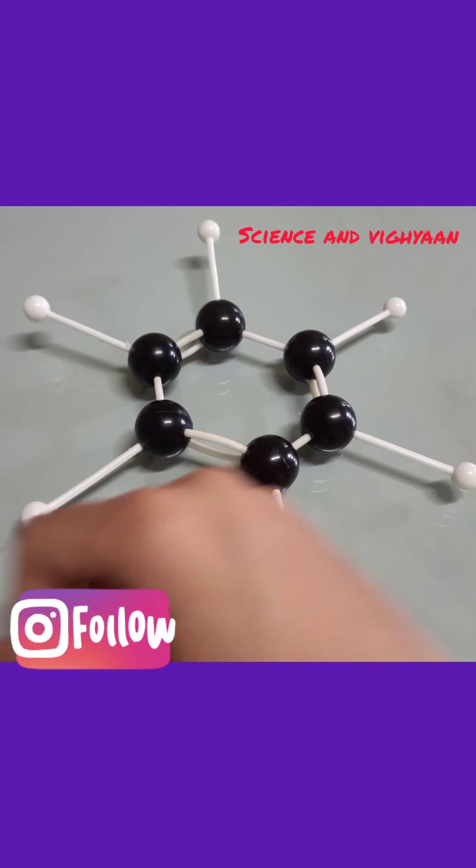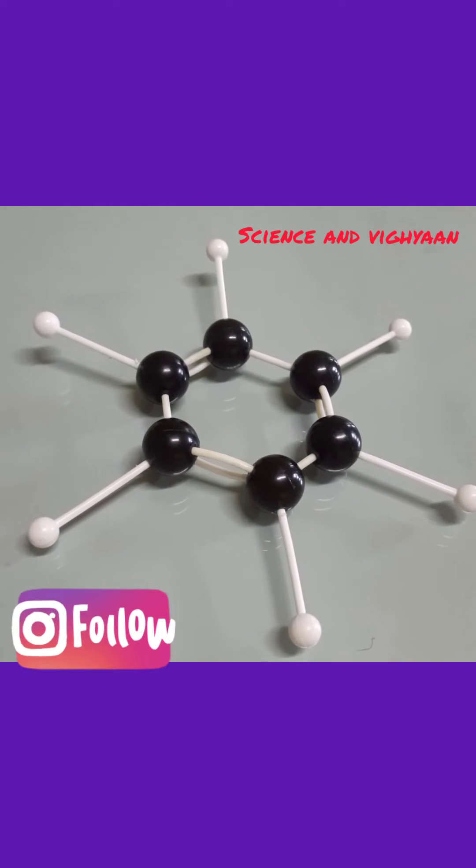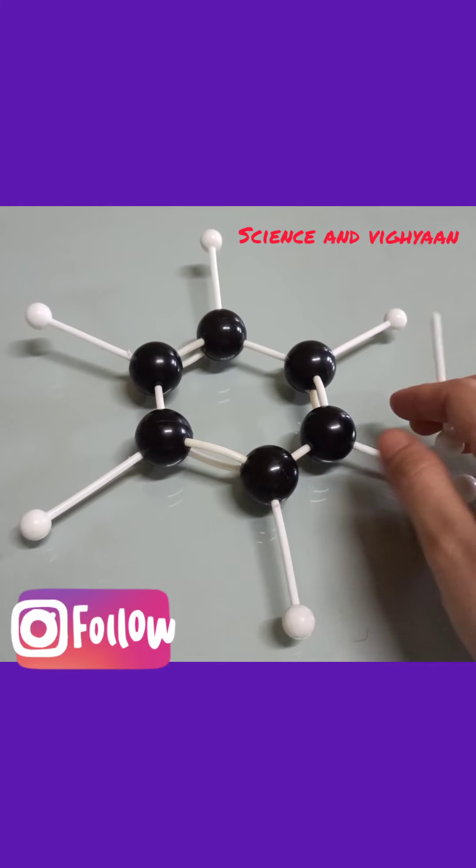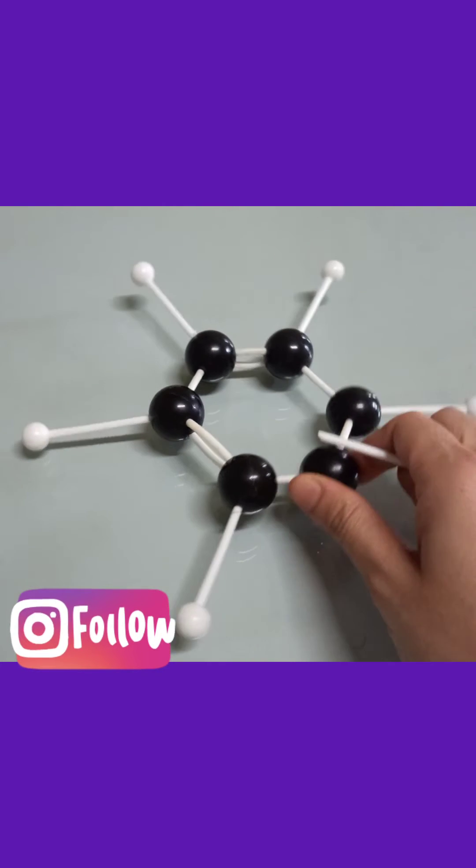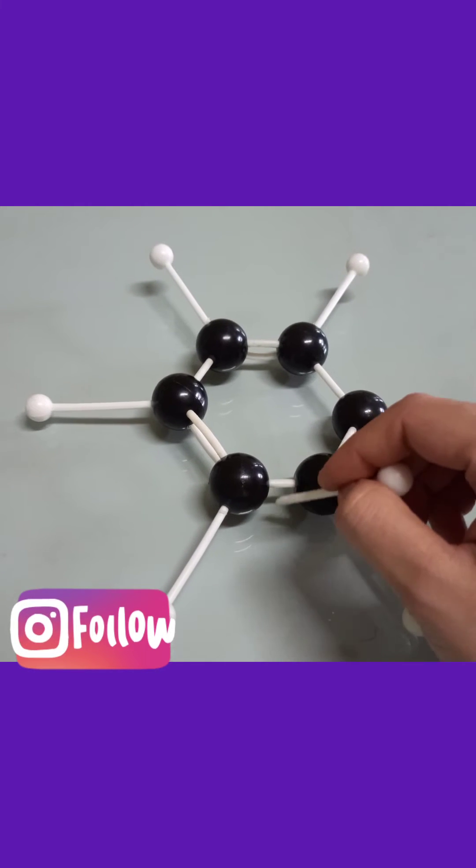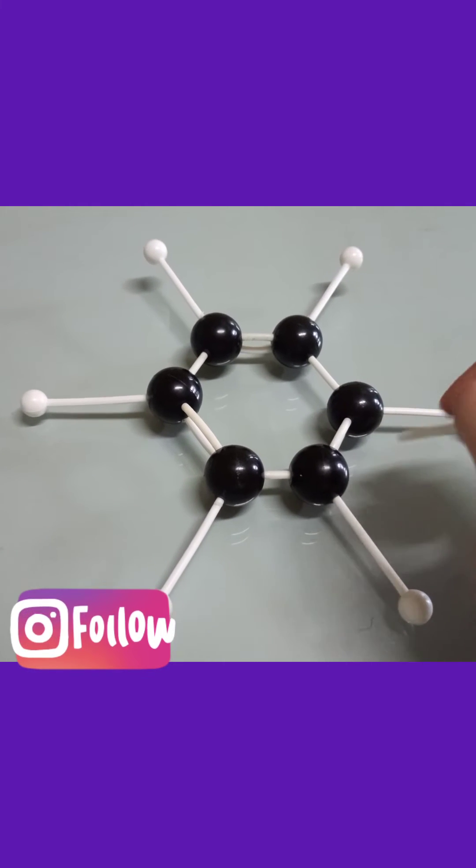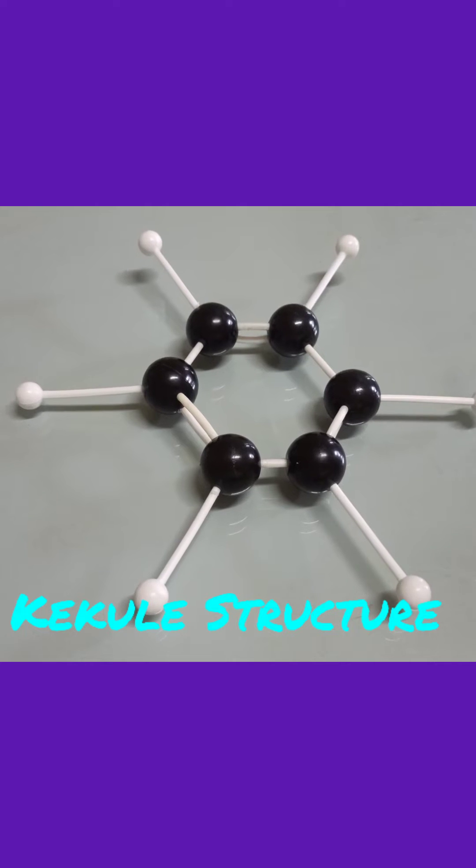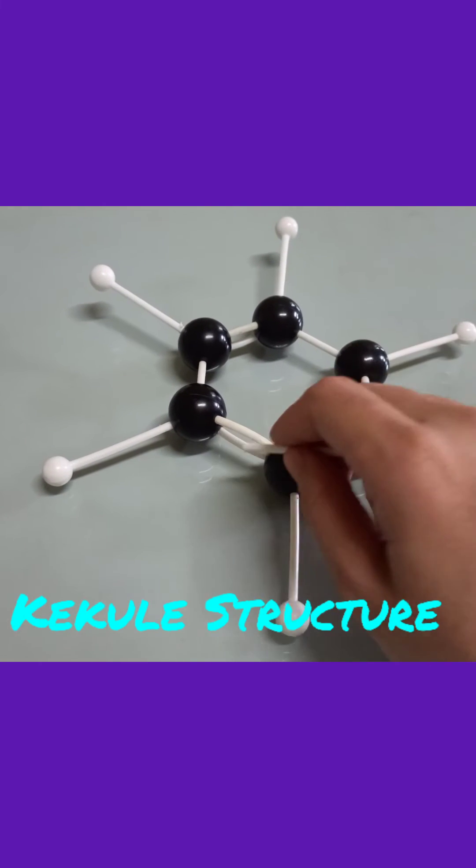Now just come to the double bond. You can see here there is a single bond also. This is a single bond and usually it is known as a covalent bond in the benzene. And what is the other name of benzene? That is a Kekule structure.